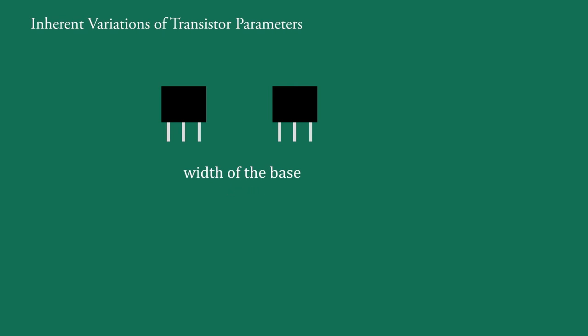Such small variations result in large changes in transistor parameters such as β, VBE, etc.